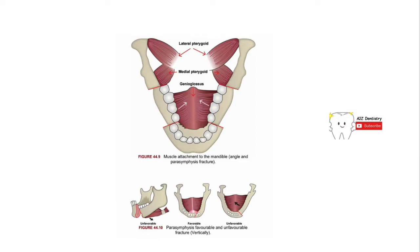This figure shows a fracture involving the parasymphysis. Apart from the medial pterygoid and lateral pterygoid, the genioglossus muscle also plays a very important role in such fractures. These three muscles are responsible for the displacement caused in parasymphysis fractures, and depending on the direction of the fracture line and whether there is any obstruction to the distal fragment, these fractures can also be classified as favorable or unfavorable.